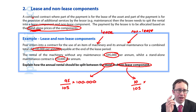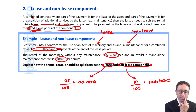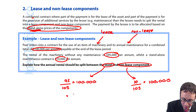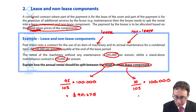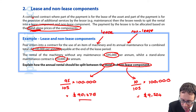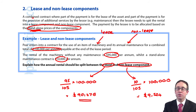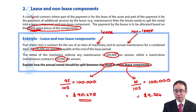Working that out on a calculator, the lease component comes to $90,476 and the non-lease component is $9,524. The lease component of $90,476 forms part of the lease payments accounted for under IFRS 16, which we'll look at in the next videos. The non-lease component of $9,524 is recognised on an accruals basis within the statement of profit or loss. So in the first year, you credit the bank and debit your expense with $9,524.